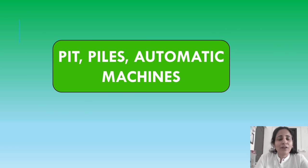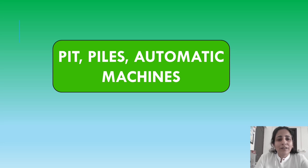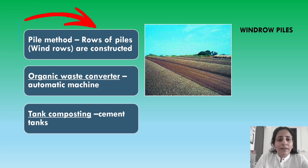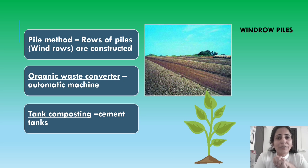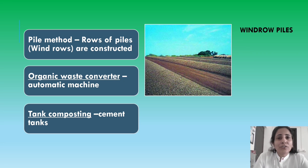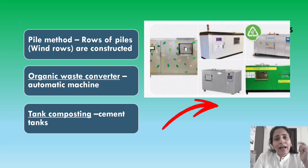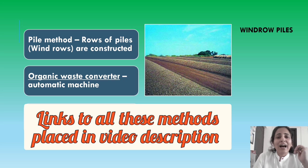Apart from bins and tumblers, we have pits or trenches methods, the piles method, and automatic machines. The pile method involves piling up rows of waste along with soil or manure in a systematic way. The pit method involves digging and dropping — digging holes beside plants where nutrients need to be transferred, which is very convenient. The trench method requires more space and is done when a stretch of land is empty for a period so composting can replenish its nutrients. There are also organic waste converter machines, and some residential societies use tank composting with a proper system. Links for all these are in the description.